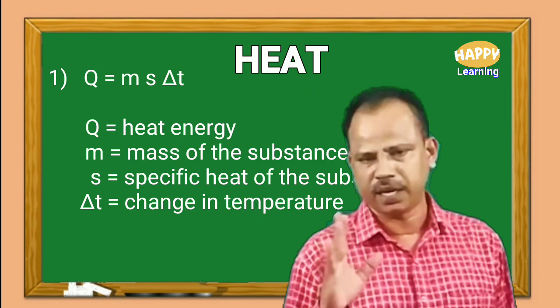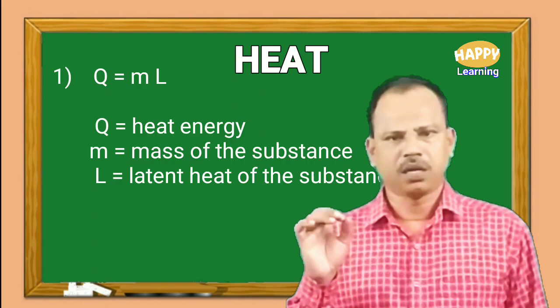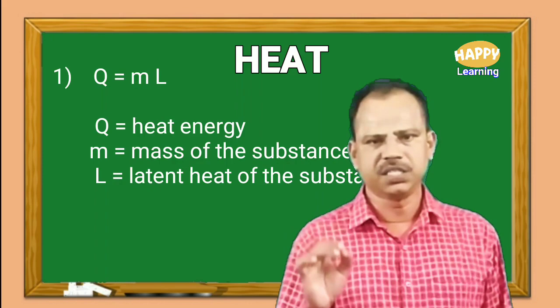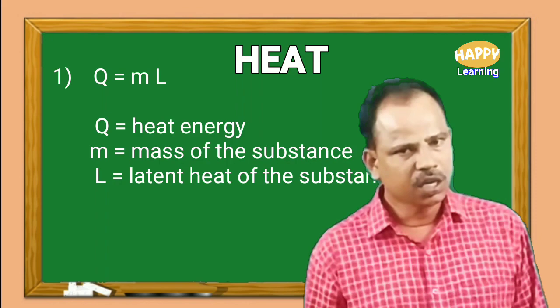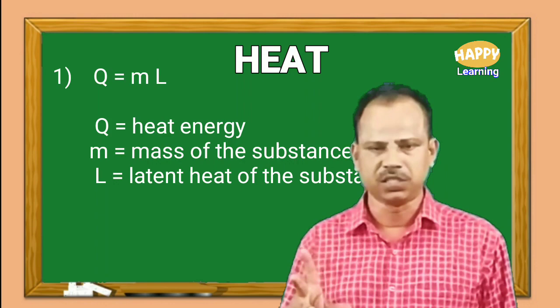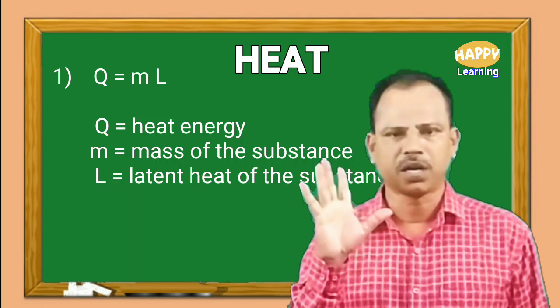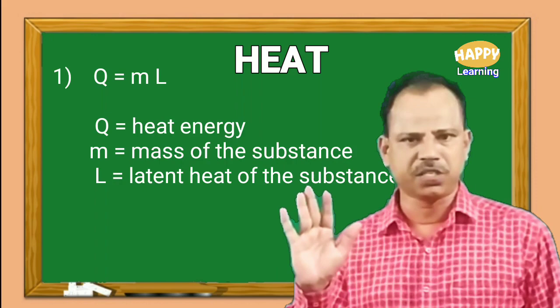Number two: Q equal to M L, where Q is the heat energy, M is the mass of the substance, and L is the latent heat. If it is fusion, use the latent heat of fusion. If it is vaporization, use the latent heat of vaporization. This Q equal to M L formula is used during phase change — solid to liquid, liquid to gas, or reverse. Whenever there is a phase change, use Q equal to M L; whenever there is a rise in temperature without any phase change, use Q equal to M S delta T.